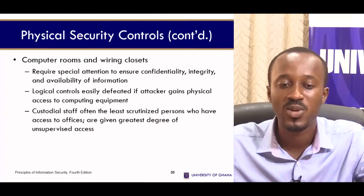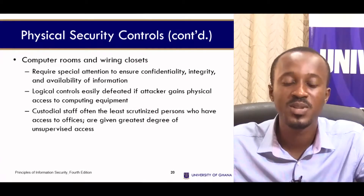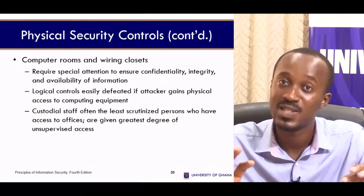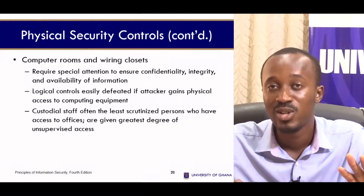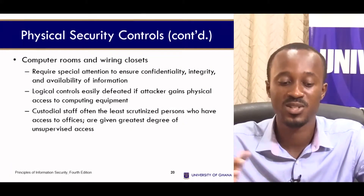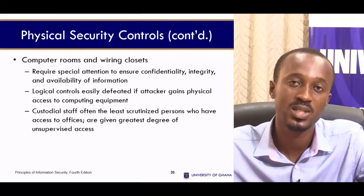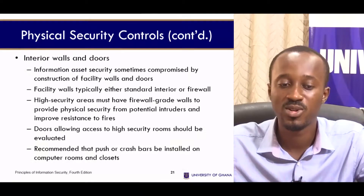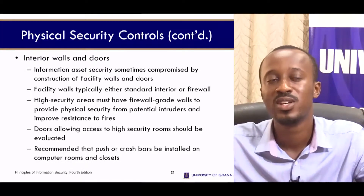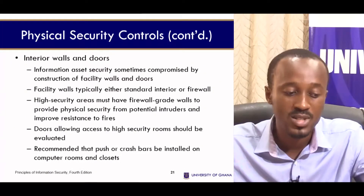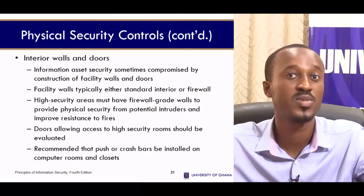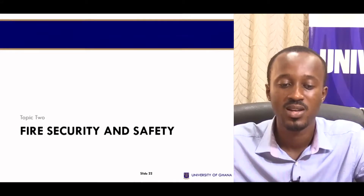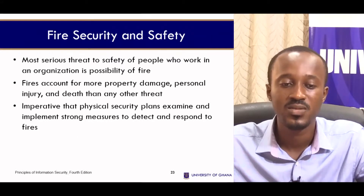Computer rooms and wire closets require special attention to ensure that CIA — confidentiality, integrity, and availability — is maintained. Interior walls and doors are also part of the physical controls that can be put in place for physical security to be enforced. With that, we'll take a look at fire security and safety.